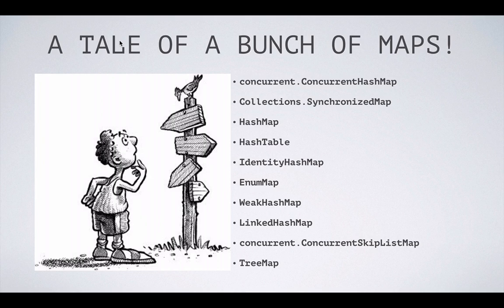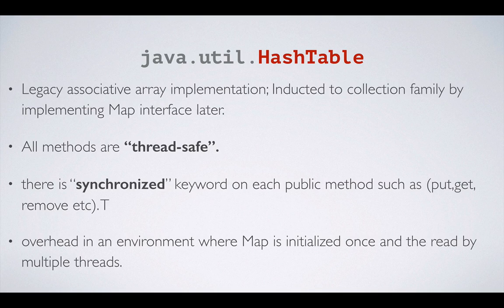Let us go and inspect the first class where it all began. The first implementation we know of is java.util.HashTable. This is the legacy associative array implementation where the first Java release had only HashTable — this was the time when the collections package was not even existing. At that time, HashTable was the only implementation of an associative array in Java.